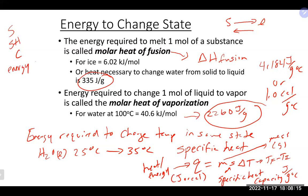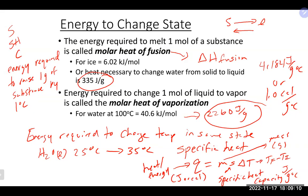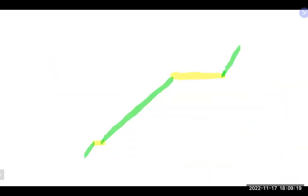Specific heat capacity — abbreviated as s or sh — is the energy required to raise one gram of a substance by one degree Celsius. Water has a very high specific heat capacity, meaning it takes enormous energy to change its temperature even slightly. In contrast, a piece of metal has a specific heat capacity of only about 0.2 J/g·°C — much less energy is needed to make a large temperature change.